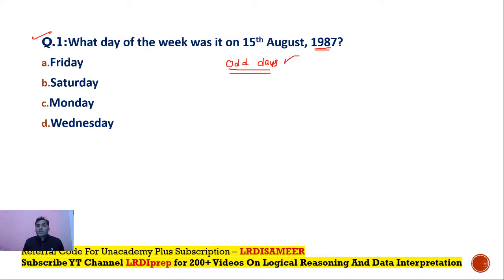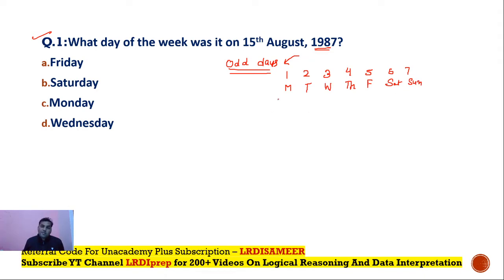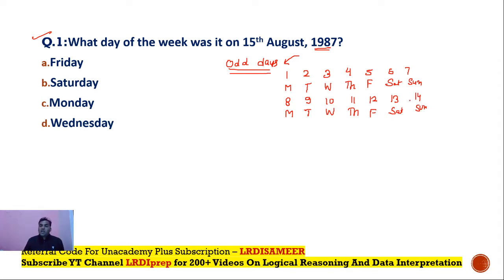The number of odd days concept is exactly similar to the concept of cyclicity. If day one is Monday, then day two is Tuesday, three is Wednesday, four is Thursday, five is Friday, six is Saturday, and seven is Sunday. When day eight comes, the day is again Monday; on the 9th it is again Tuesday, and on the 10th it is Wednesday. After a period of seven days, the complete cycle of Monday to Sunday keeps repeating.